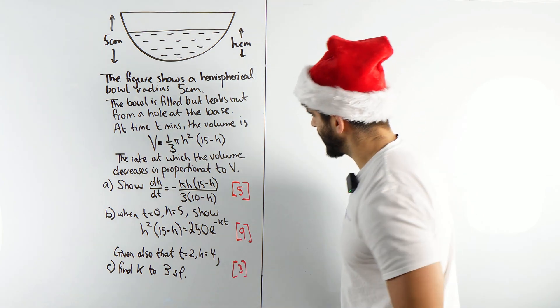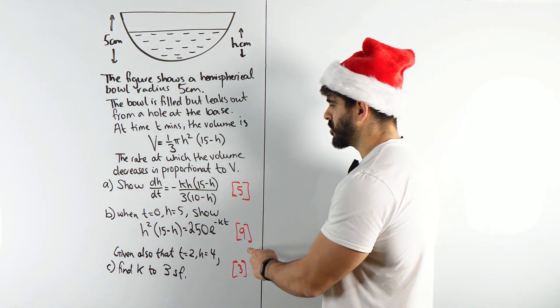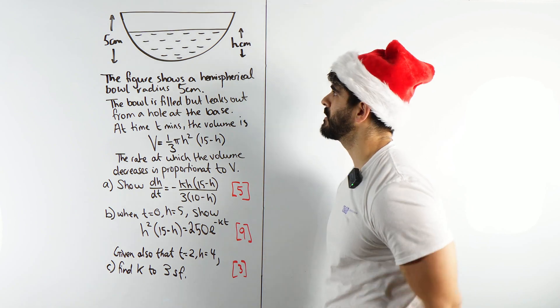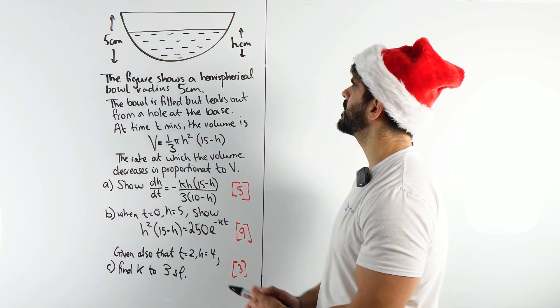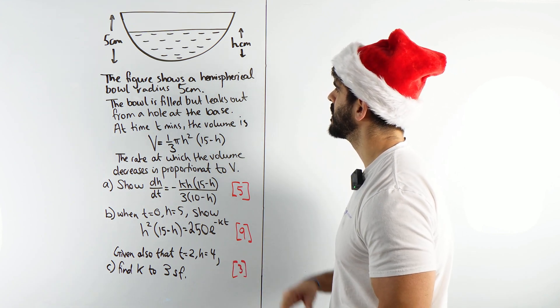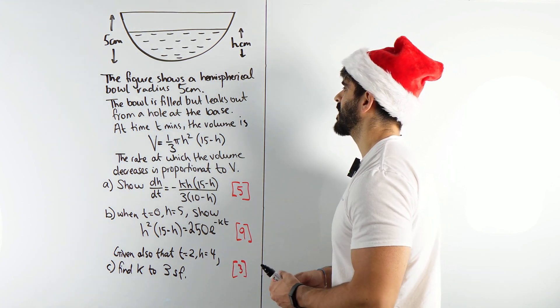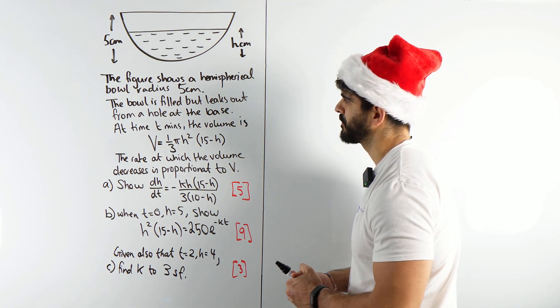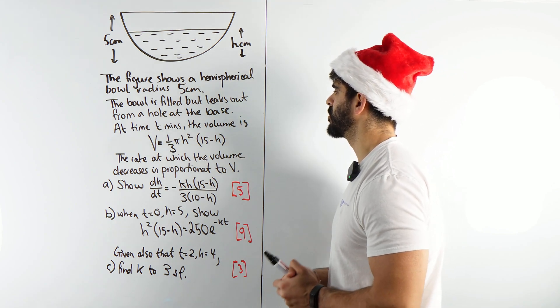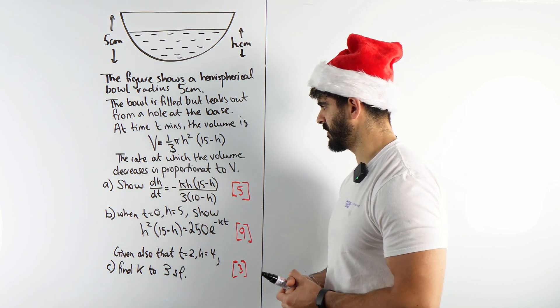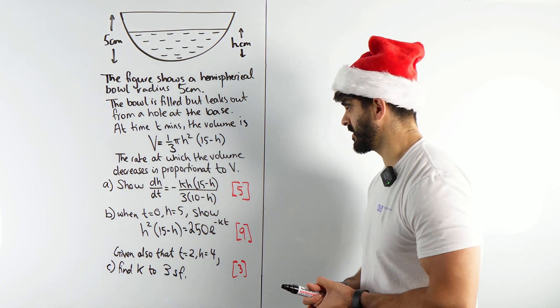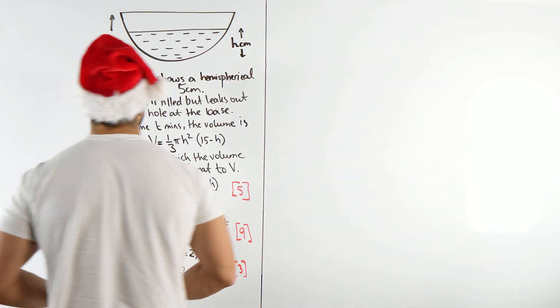I've spent the time writing the question out. I have merged part B, though, because there's just so much yap. I'm not going to do part B and C separately. So you've got this hemispherical bowl radius 5 centimetres. The bowl is filled but leaks out from a hole at the base. At time T minutes, the volume is this. The rate at which the volume decreases is proportional to V. Show that dH/dt is this for 5 cheeky marks.